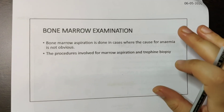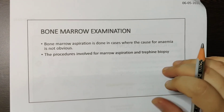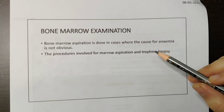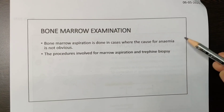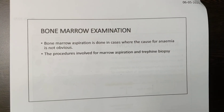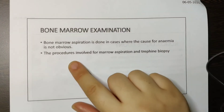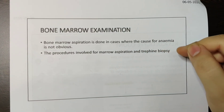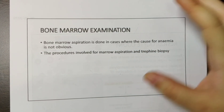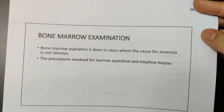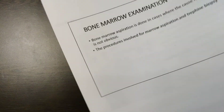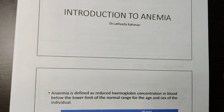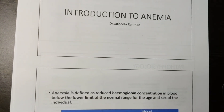Lastly, bone marrow examination. Bone marrow aspiration is done in cases of anemia — this was already discussed in the previous class, you can refer to those notes. The two procedures are marrow aspiration and trephine biopsy. So students, we have finished the introduction to anemia. Next will be the classification of anemia. Thank you.